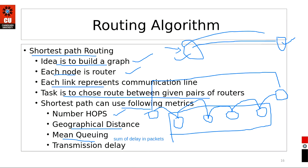The hop count is the number of times a packet passes through an internetworking device. If it passes through four devices, the hop count is four. As the number of internetworking devices on a route increases, the hop count increases. Transmission delay — how long a packet takes to travel from one point to another — is also a metric used to determine the shortest path.